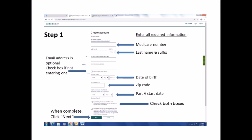But be sure to check the box below if you are not entering an email address. Then, using the drop-down menu, enter your date of birth. Next, enter your five-digit zip code. Now, enter your Part A coverage start date as shown on your Medicare card. If you only have Part B, click on the link that says "Don't have Part A" and it will allow you to enter your Part B coverage date.